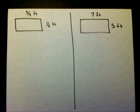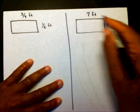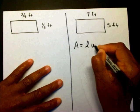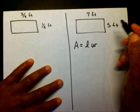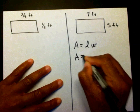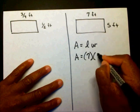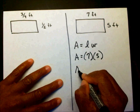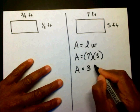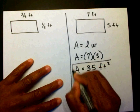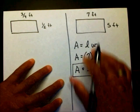Alright, so let's find this area first. So I'm going to write A equals length times width. So which one is my length? My length is going to be 7 and 5 is my width. It's going to say A equals 7 times 5, which is 35 feet squared. This is your area for that triangle.